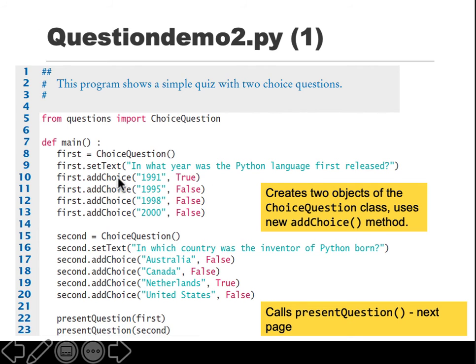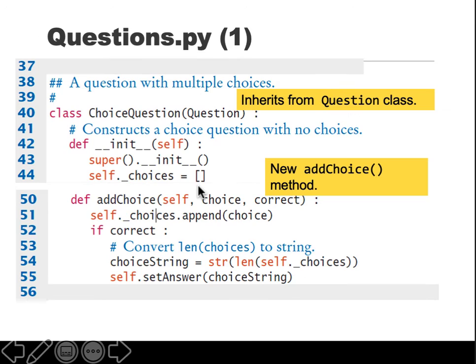Then you add choices. 1991 is true, all the others are false. When you say addChoice 1991, this function is called with 1991 and true. choices.append - choices was empty, this is the first one. If true, do this: get the index of choices, set that as the answer. The setAnswer function is not available in this class.